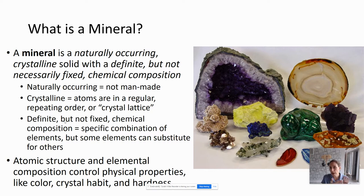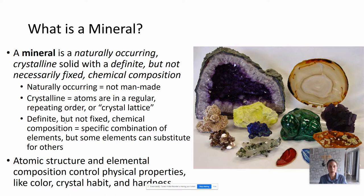For those of you who are educators, students, or people who haven't taken a mineralogy class, I'll start by defining what a mineral is so we're all on the same page. The definition of a mineral is that it is a naturally occurring crystalline solid with a definite but not necessarily fixed chemical composition. Naturally occurring means minerals are not man-made. Crystalline means that the atoms in these solids are in a regular repeating order, or in a crystal lattice. This definite but not fixed chemical composition means that minerals are made up of a specific combination of elements, but some elements can substitute for others in some minerals. The atomic structure and elemental composition of minerals control their physical properties.